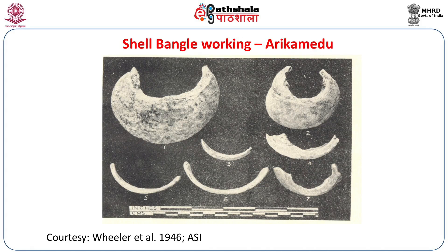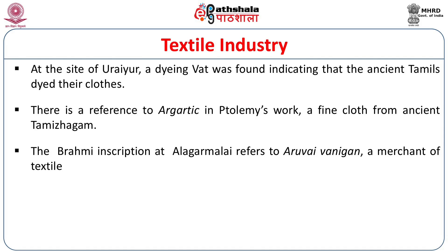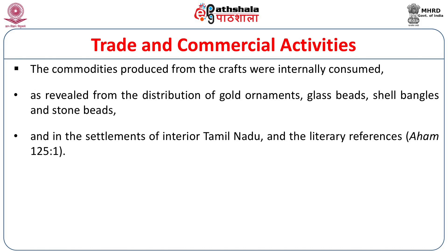Shell bangle production was one of the industries of the early historic period — shell bangle wasters and fragments are found at many archaeological sites. For textiles, Sangam literature has very beautiful references, including mention of very thin cloth, and archaeological sites provide evidence for textile production in the form of tanks. Even foreign sources mention a kind of textile called argatic, which scholars suggest could have come from Urayur or the southern part of Tamil Nadu — these textiles were exported outside India. We get a lot of description of trade and commercial activities in both literature and archaeology.